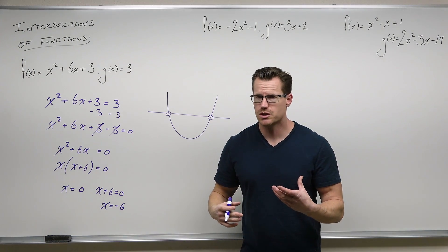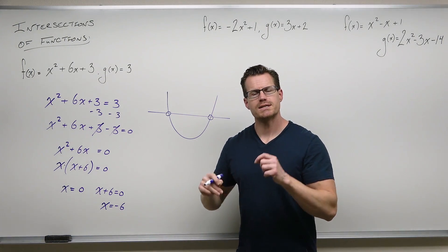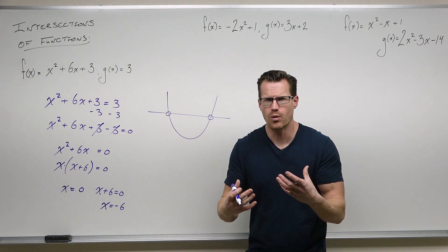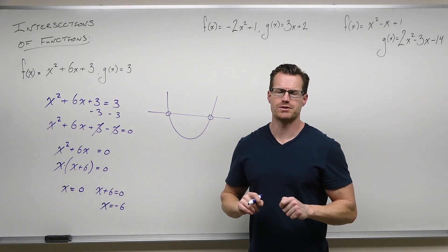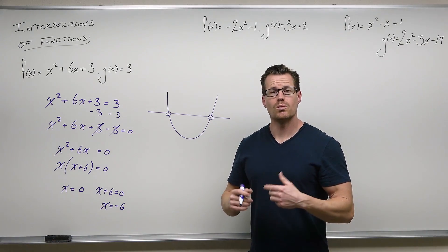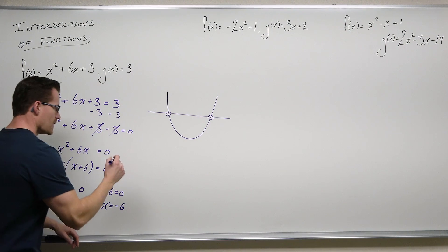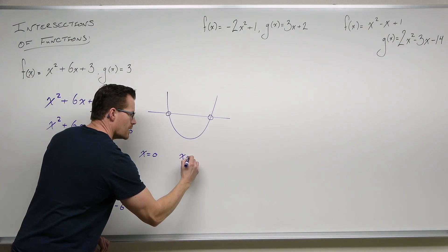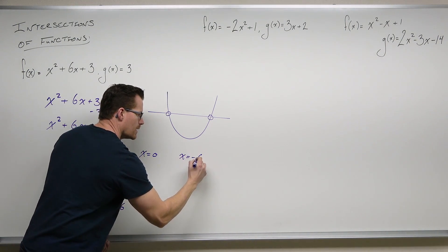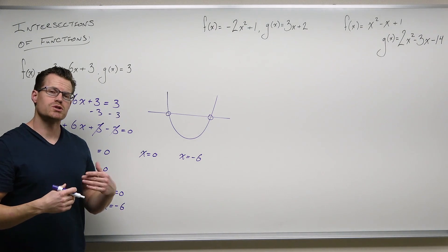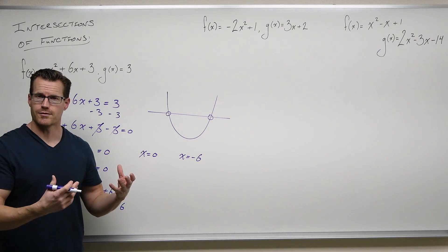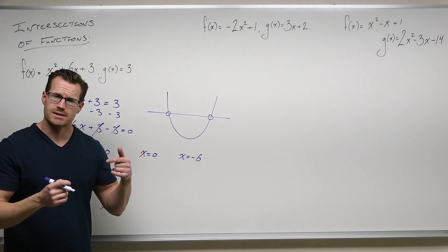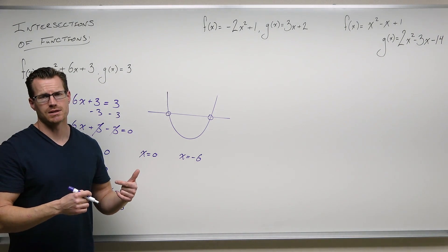What we want to do is go a little bit further. We want to take those values and find the ordered pairs of intersection — the points where these two graphs intersect. So from x equals zero and x equals negative six, we should be able to plug those into one of our functions, or both if you want to check your work, and see that this actually gives us what we want.